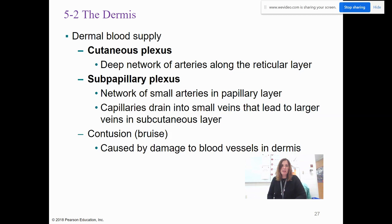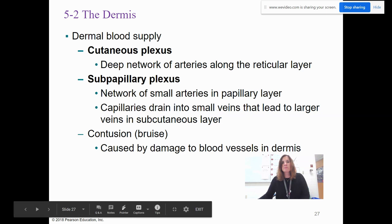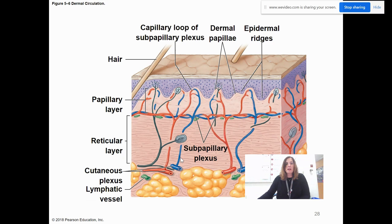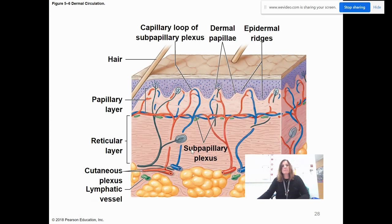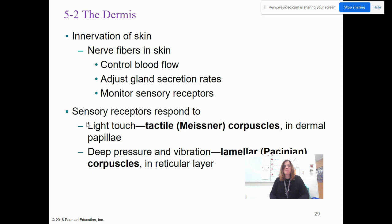If you get a bruise, that is caused by damage to a blood vessel in the dermis. Looking at the diagram, you can identify the papillary layer with the dermal ridges and dermal papillae. The reticular layer is below, and you can see the sub-capillary plexus with its blood vessels and the cutaneous plexus — the sub-capillary plexus forms a loop right below the capillary layer.